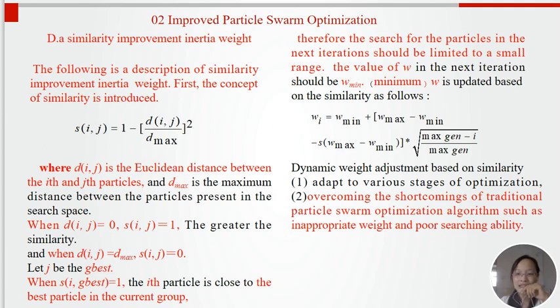Dynamic weight adjustment based on similarity can adapt to various stages of optimization, overcoming the shortcomings of traditional particle swarm optimization algorithms such as inappropriate weight and poor capability.